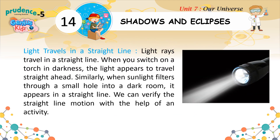Light travels in a straight line. When you switch on a torch in darkness, the light appears to travel straight ahead. Similarly, when sunlight filters through a small hole into a dark room, it appears in a straight line.